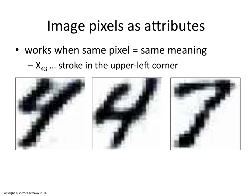Why did it work? Why can we use pixels for representing digits? And in what cases is it a good idea, and in what cases is it not a good idea?